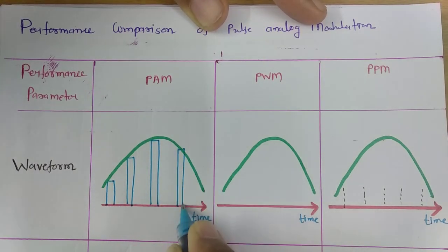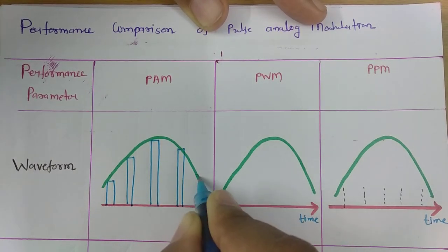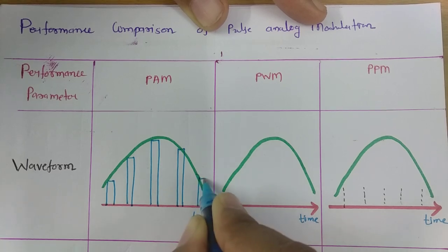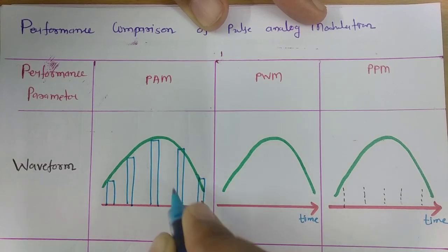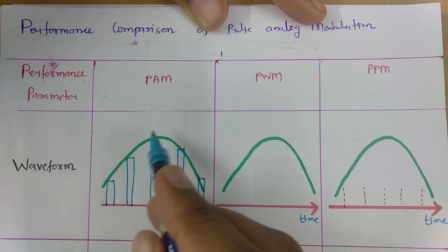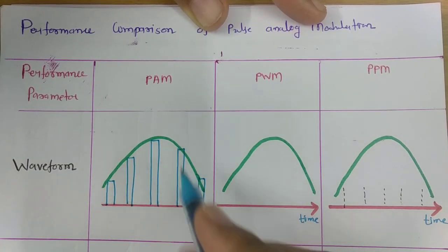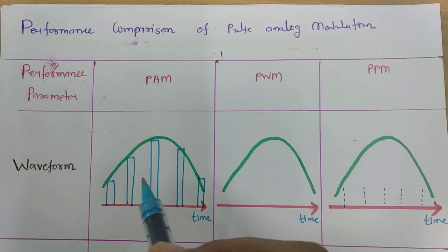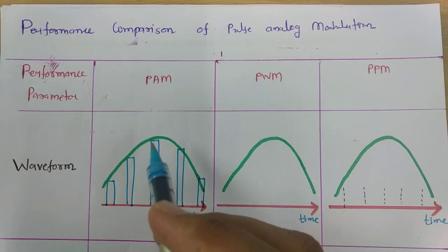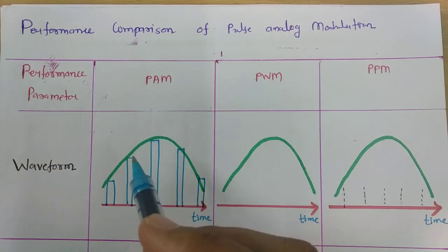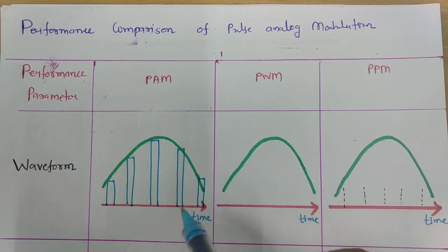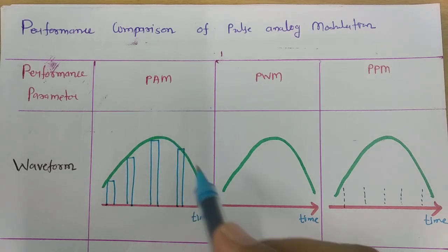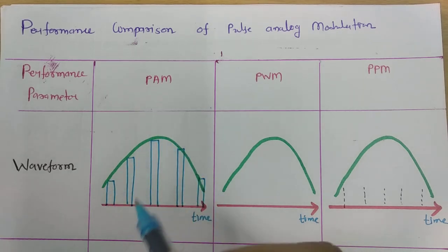So here, amplitude is actually changing with the pulse. Ultimately, with respect to the input signal, the amplitude of the pulse will change. One can see it over here — that is how it is changing.